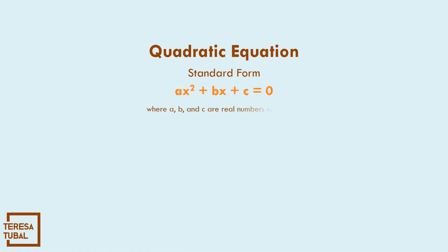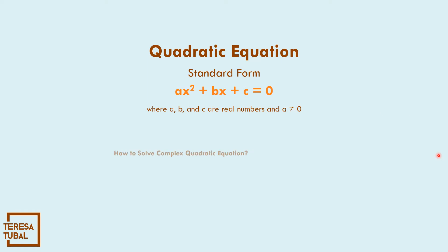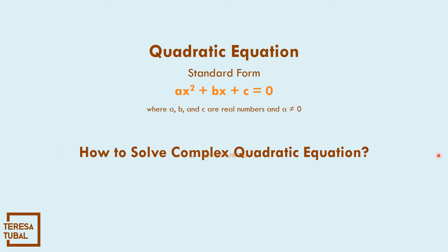In our previous lesson, a quadratic equation in standard form is Ax² + Bx + C = 0, where A, B, and C are real numbers, and A should not be equal to 0. So, what if we need to solve a complex quadratic equation?